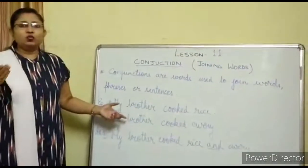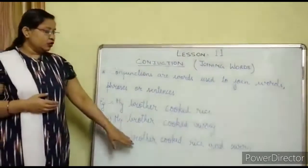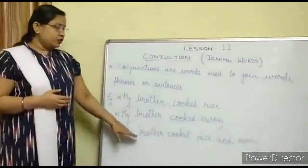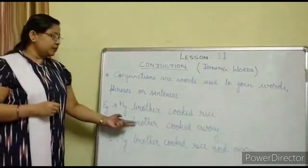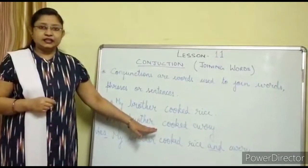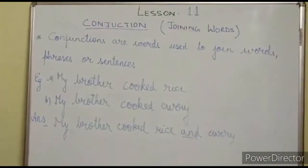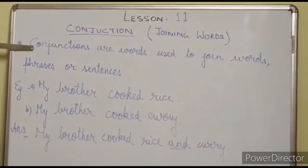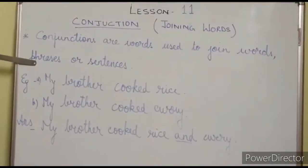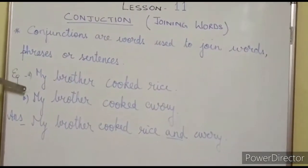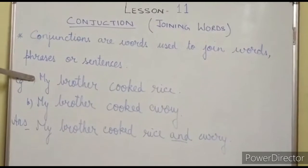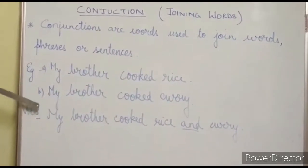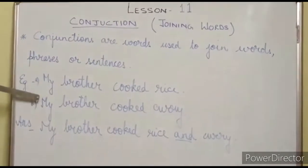My brother cooked rice and curry. We have not repeated 'my brother cooked' in the second sentence. So the conjunction used here is 'and' to join the two sentences. The definition: conjunctions are words used to join words, phrases, or sentences. Example: 'My brother cooked rice' and 'My brother cooked curry' — joined as 'My brother cooked rice and curry.'